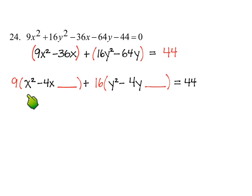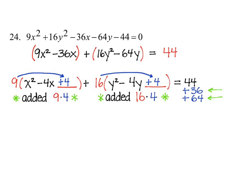So I factor out the 9 from the x's and the 16 from the y's. I need to complete this square by adding 4 and complete this square by adding 4 as well. But remember, I didn't add 4 and 4 to the equation. I added 4 times 9, or 9 times 4, and 16 times 4 to the equation. So that's 36 and 64.